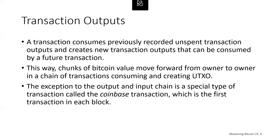The exception to the output-input chain is the Coinbase transaction, which is the first transaction in each block. This is a transaction placed by the winning miner that creates brand new Bitcoin payable to that miner as a reward for mining. This special Coinbase transaction does not consume UTXOs; instead it has a special type of input called the Coinbase. This is how Bitcoin's money supply is created during the mining process.